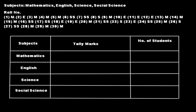Starting from roll number 1, let's use tally marks. Roll number 1 likes mathematics — one tally bar. Roll number 2 likes English — one tally bar. Roll number 3 likes mathematics, roll number 4 likes mathematics. Roll number 5 likes mathematics, roll number 6 likes social science, roll number 7 likes social science, roll number 8 likes science, roll number 9 likes mathematics — that's five bars. Roll number 10 likes English.